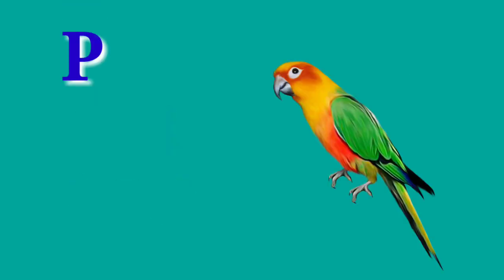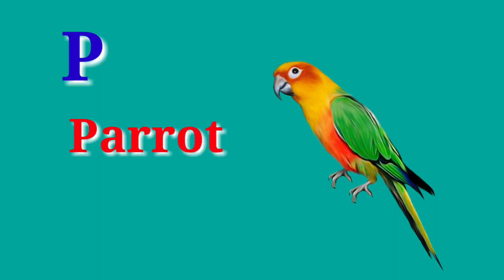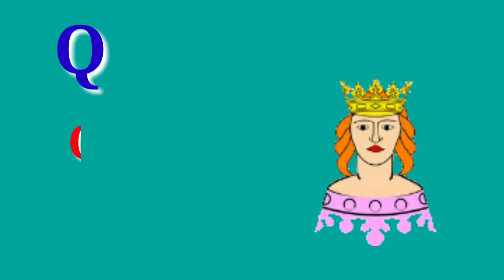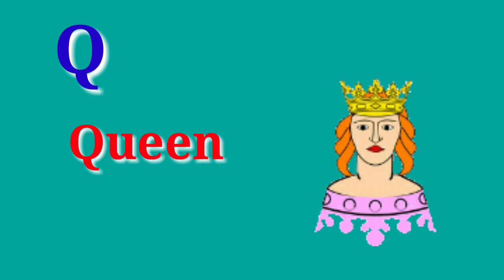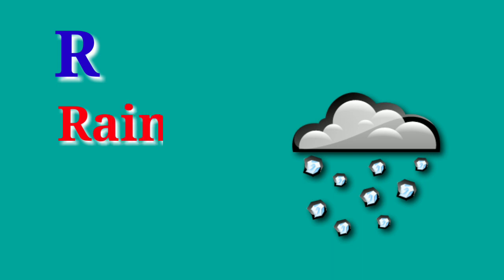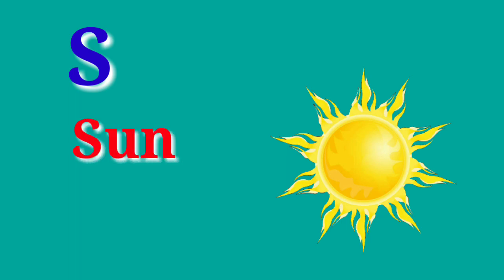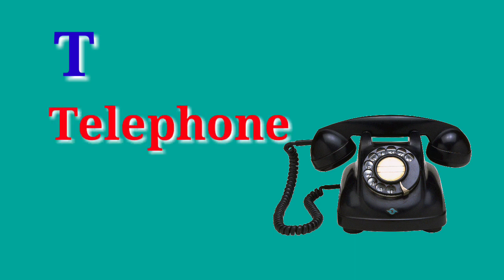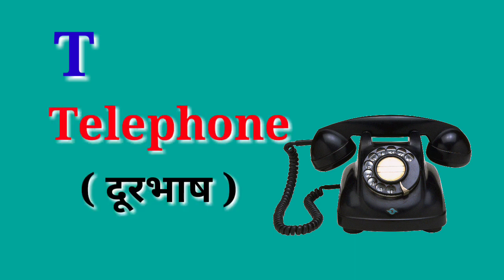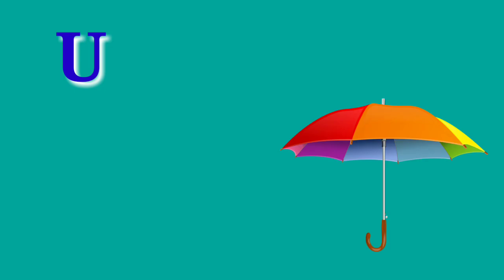P for parrot, parrot means tota. Q for queen, queen means rani. R for rain, rain means baris. S for sun, sun means suraj. T for telephone, telephone means durbhas.